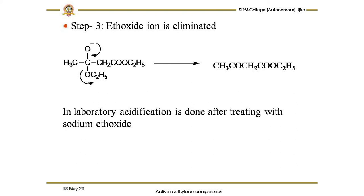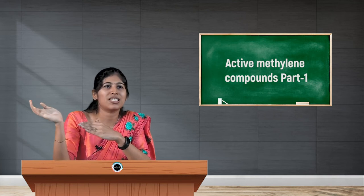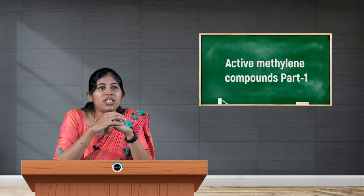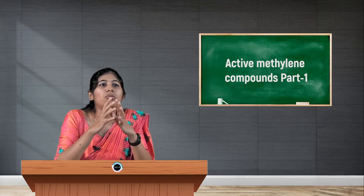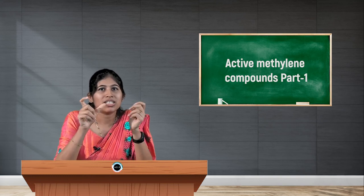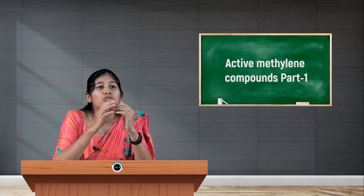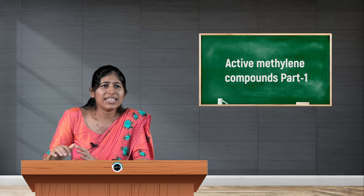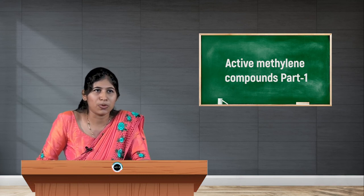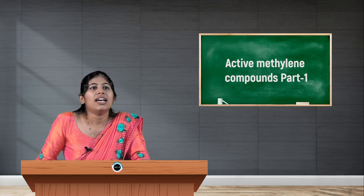In the laboratory, two molecules of ethyl acetate in the presence of sodium ethoxide give ethyl acetoacetate. After the addition of sodium ethoxide, acidification is carried out at the end. This is because the methylene group is highly acidic and may form a salt again, so acid is added to convert it back to ethyl acetoacetate. This is the laboratory process for Claisen condensation.